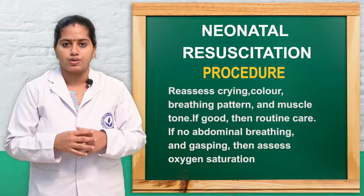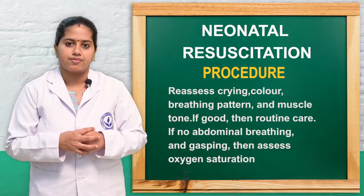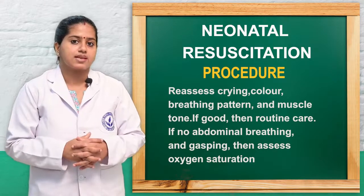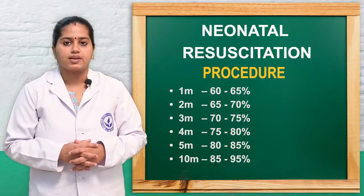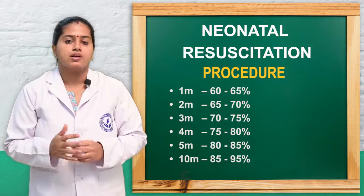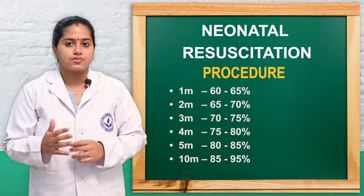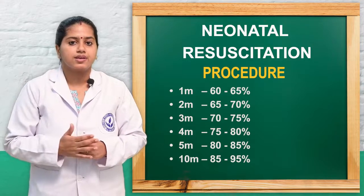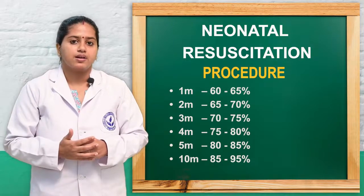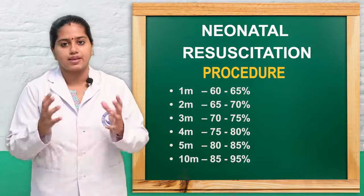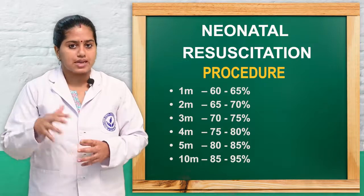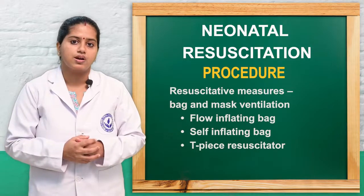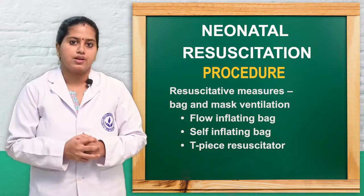If the baby again has no audible breath, is gasping, or has cyanosis, we assess the oxygen saturation. The target oxygen saturation values are: at 1 minute — 60 to 65 percent; at 2 minutes — 65 to 70 percent; at 3 minutes — 70 to 75 percent; at 4 minutes — 75 to 85 percent. If the oxygen saturation is below these criteria, we go with the assisted measure of bag and mask ventilation for the newborn baby.